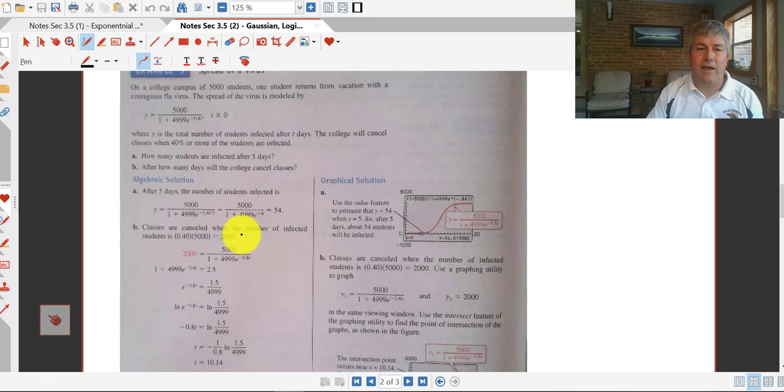Now classes are canceled when 40% of the student body is impacted by this. So we take 40% of 5,000 and calculate that, and we realize that's 2,000 students. So now we've got our y value, and we have to back into after about how many days do we think we're going to reach that level of 2,000 students.